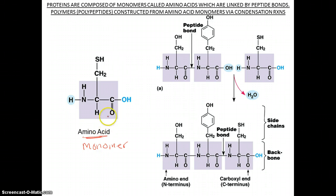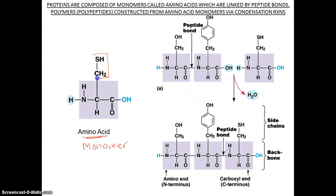Now, if you look at the amino acid, you have a central carbon, and that central carbon has a hydrogen, a carboxyl group, an amino group, and a side chain. Each amino acid is different according to its side chain, which I usually represent as R. There are 20 different side chains, so there are 20 different amino acids.